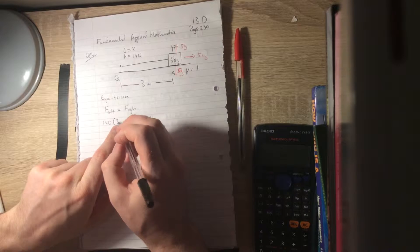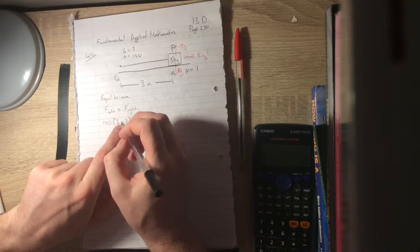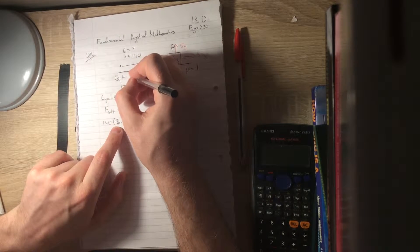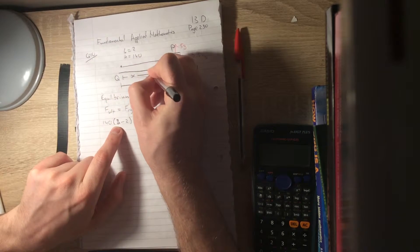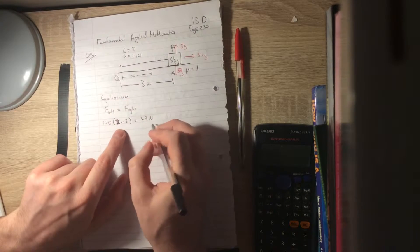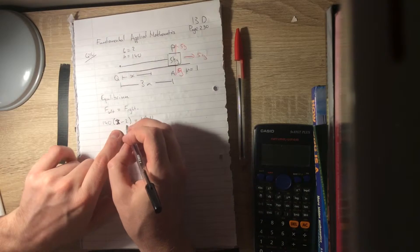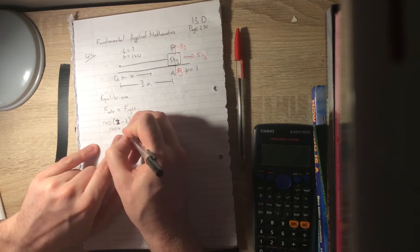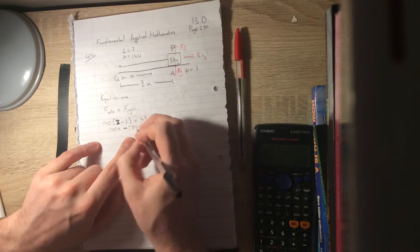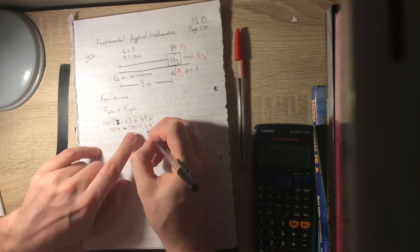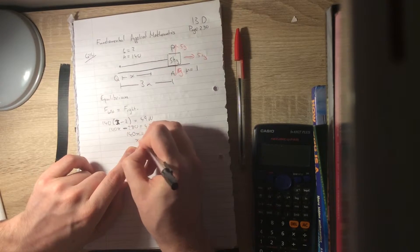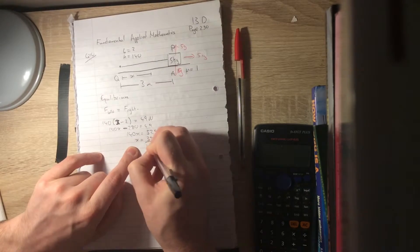At the equilibrium point, the distance is not 3, it's going to be x. Because that's what we're interested in. So 140 times x minus 2 equals 49. From there we get 140x minus 280 equals 49. Moving that over, 140x is 329, and then x is 329 over 140.